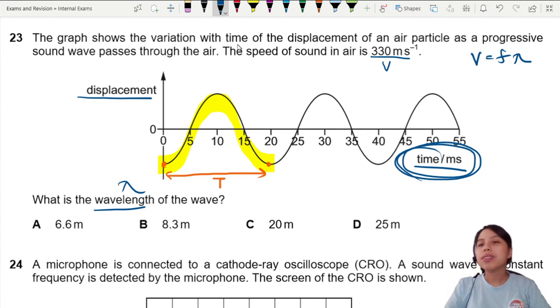So let's sub in all the values, 330, frequency. Oh, cannot wait, use another one. Okay, we shortcut. V equals lambda over T. That's better.